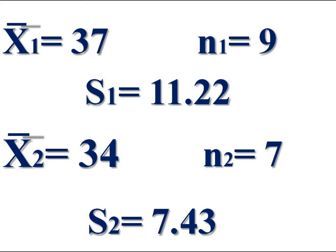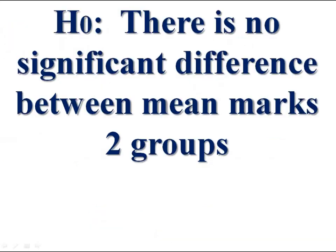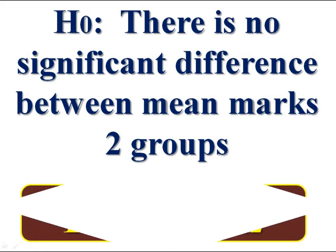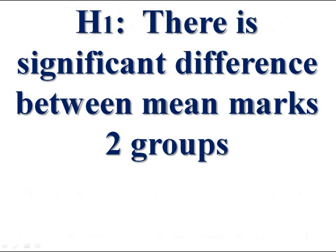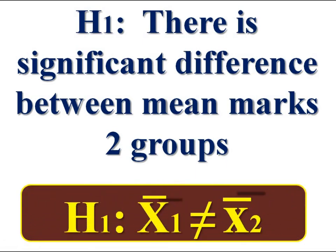Then formulate hypotheses. Null hypothesis H0: there is no significant difference between mean marks of two groups, that is H0: x bar 1 is equal to x bar 2. Alternative hypothesis H1: there is a significant difference between mean marks of two groups, that is H1: x bar 1 is not equal to x bar 2.